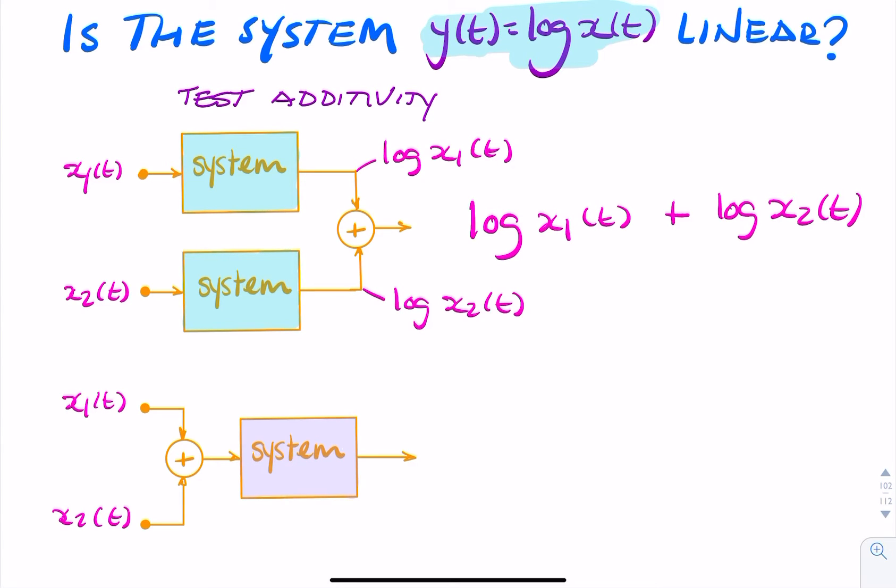Then we do the same but this time we add before feeding into the system. So the input to the system would be x1 plus x2. Now if that's my input, what does my system actually do?